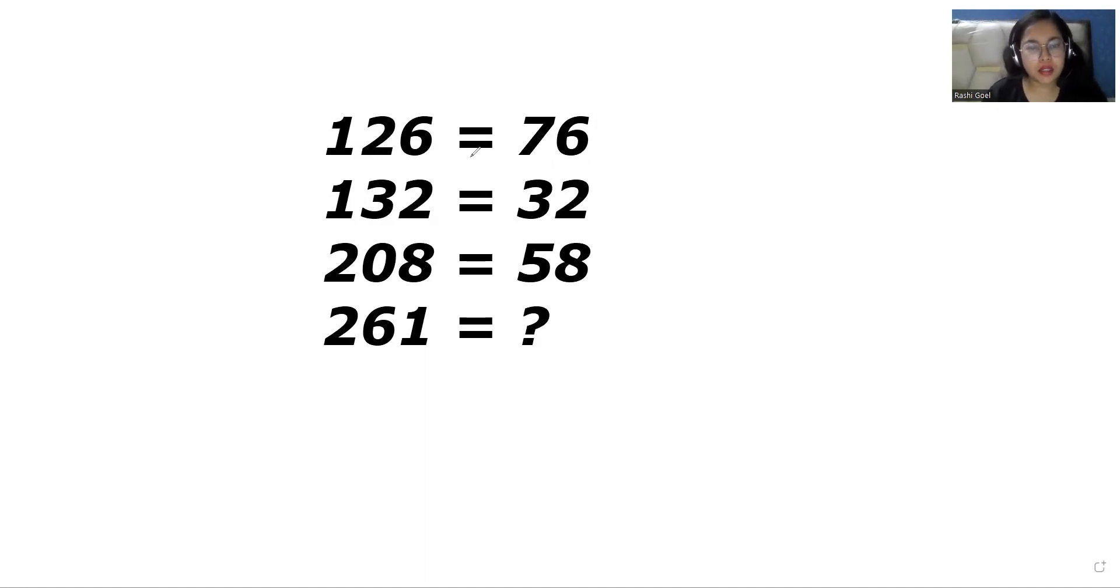So now the puzzle is, they have given you 126 is equal to 76, 132 is equal to 32, 208 is equal to 58 and we have to find the value of 261. So now what's the logic behind that?